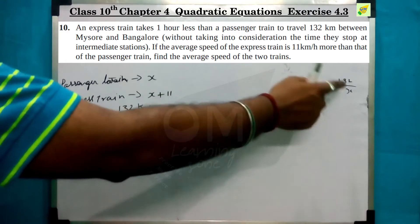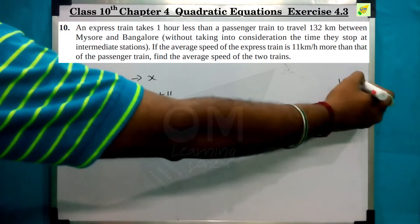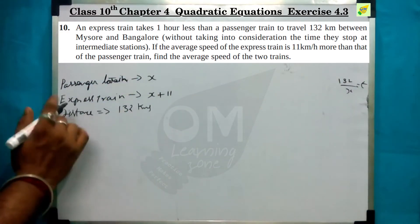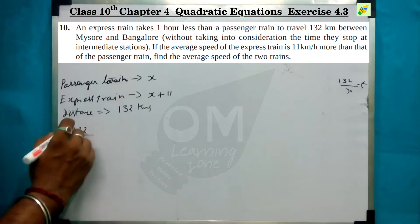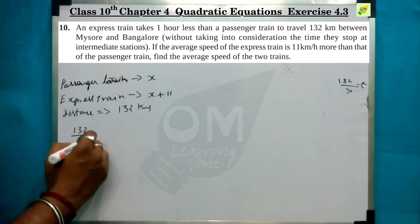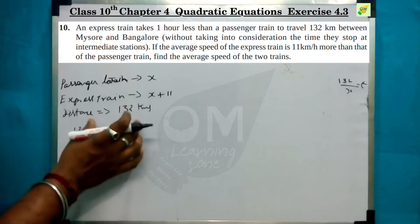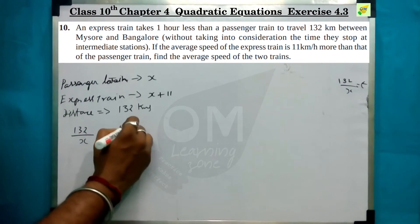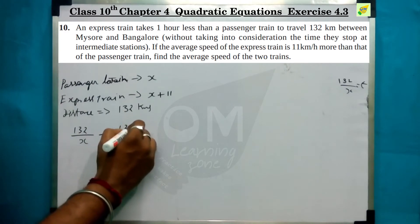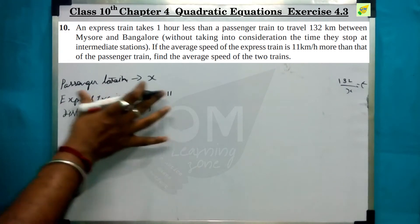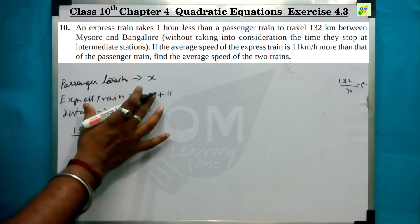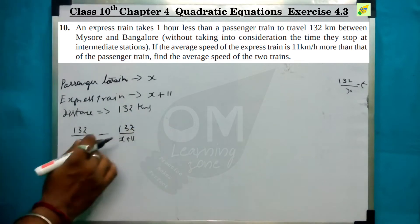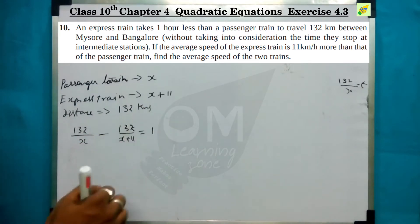So in this case, distance divided by speed is equal to time. We have 132 divided by x — the passenger train speed — minus 132 divided by x plus 11, the express train speed. This difference equals 1 hour.